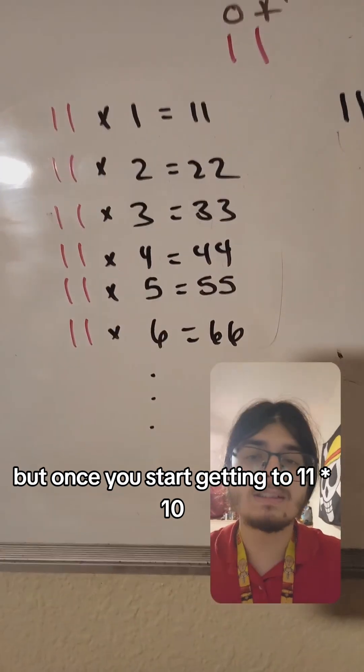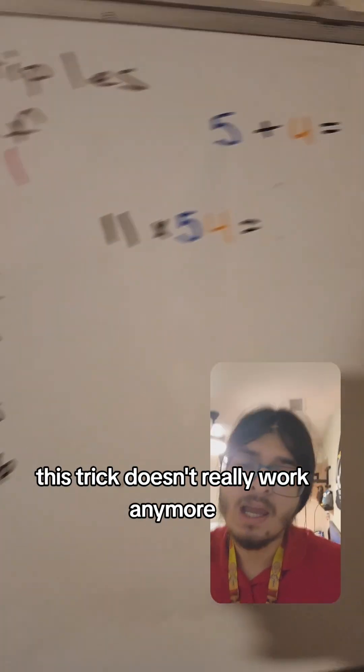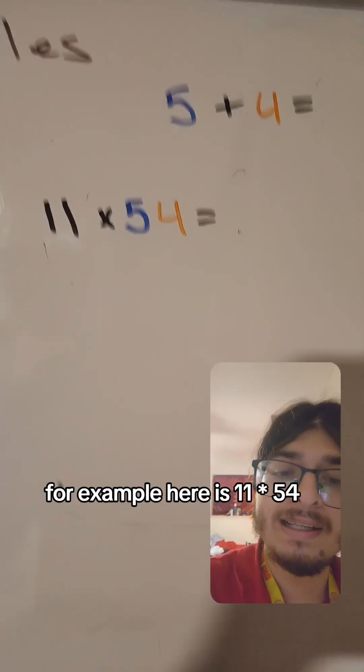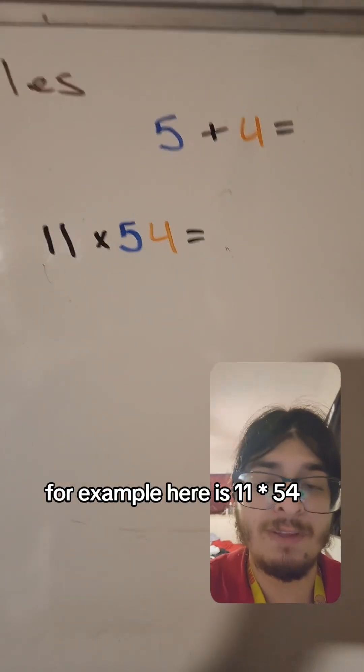But once you start getting to 11 times 10, this trick doesn't really work anymore. So we have another trick to multiply these huge numbers. For example, here is 11 times 54.